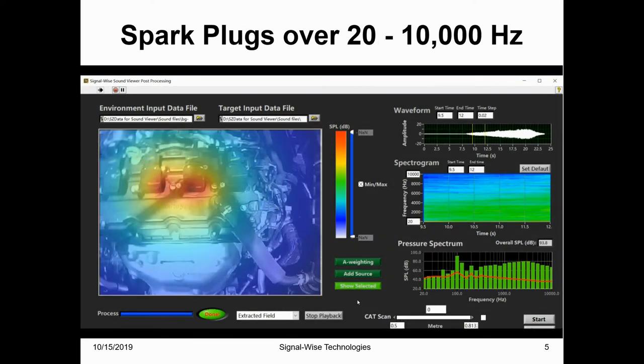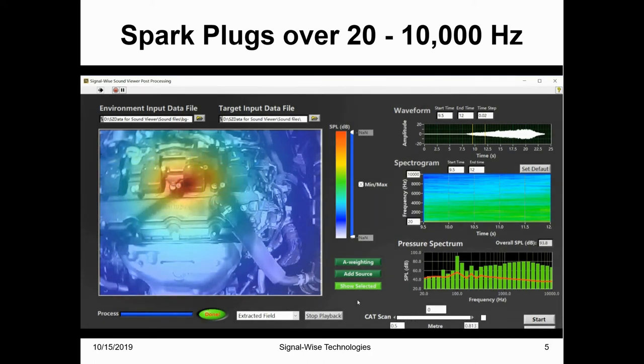Shown here is the sound pressure level distribution in the selected time-space frequency domain from 20 to 10,000 Hz frequency range. Obviously, the major engine noise has been eliminated and the engine spark plugs noise sources are more prominently illustrated.